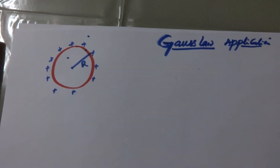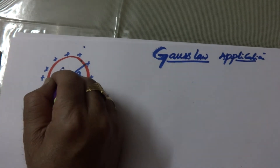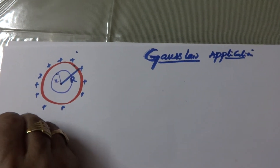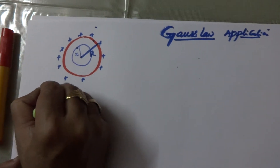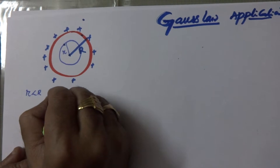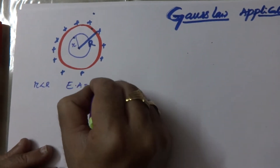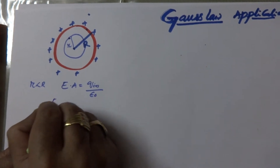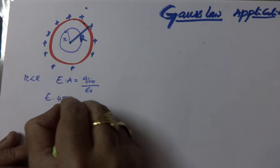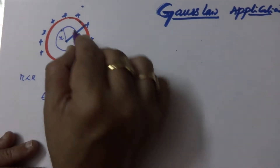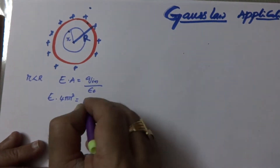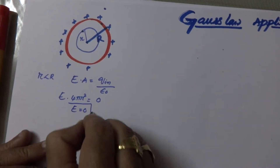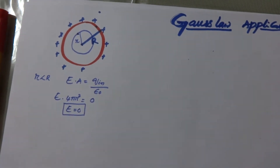First, let us find out by drawing the Gaussian surface inside. That means we are discussing the case when r is less than R. We apply Gauss Law: E·A must be equal to Q inside the Gaussian surface divided by ε₀. So E into 4πr² — but what is the charge inside the hollow sphere? It is zero. Therefore zero divided by anything is zero, so E is also equal to zero. That means there is no electric field inside the hollow sphere.